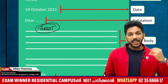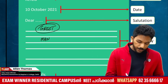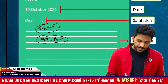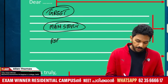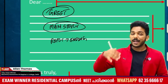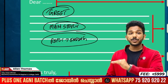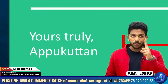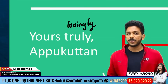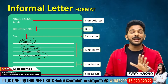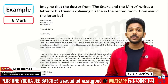Step two is the main story or content — this is where you write the main body of the letter. Step three is the conclusion — in the closing paragraph, you write something like 'Waiting for your reply.' Finally, you close with 'Yours lovingly' or 'Yours truly,' followed by your name. So an informal letter includes: from address, date, salutation, main body with greeting, main content, and a closing with your name.